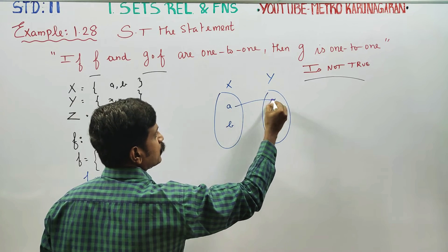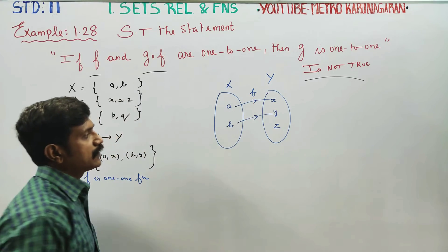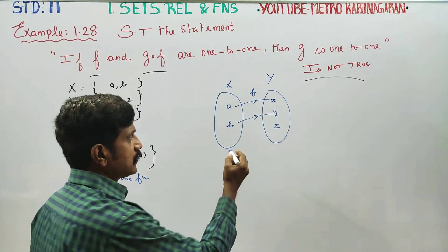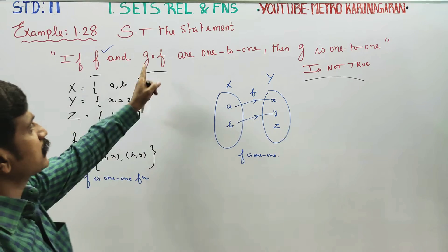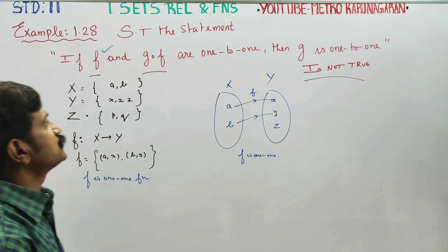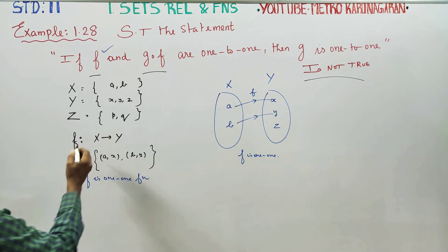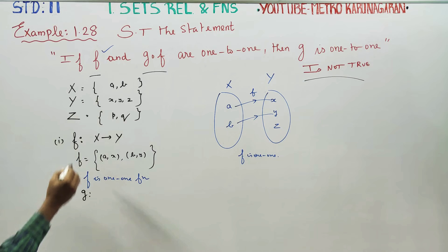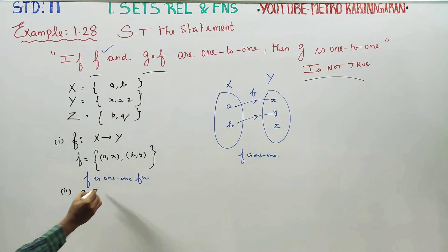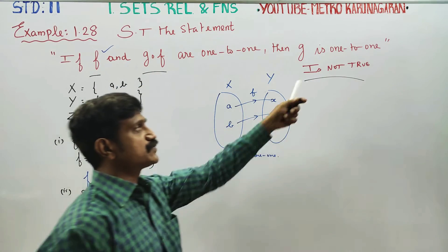a is mapped to x, and b is mapped to y. This is the f function. Distinct elements have distinct images, so f is a 1-to-1 function. Now, g∘f is also 1-to-1. In the second step, g is defined from Y to Z.